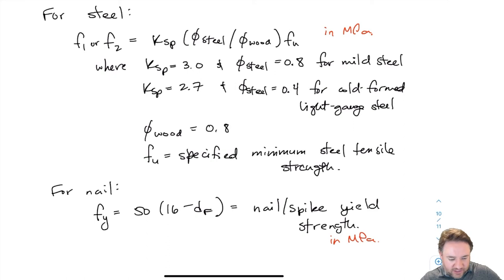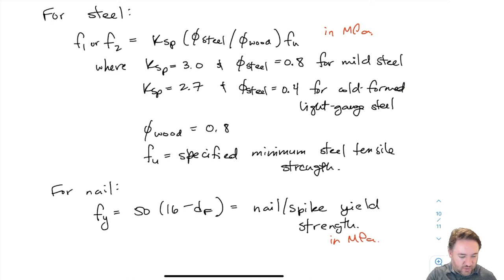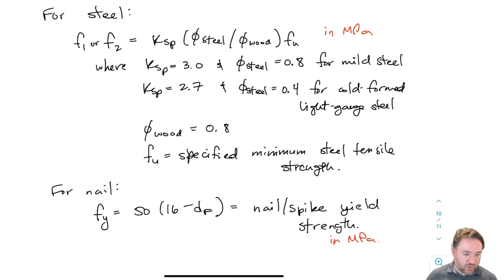In this video we looked at the individual nail strength: all of the Johansen yield equations, all the different failure modes we need to consider, and all the inputs for those equations. In the next video, which will finish up the topic of lateral strength of nailed connections, we will calculate the total resistance of the nailed connection — adding up all the nails properly, including modification factors and other potential modification factors.